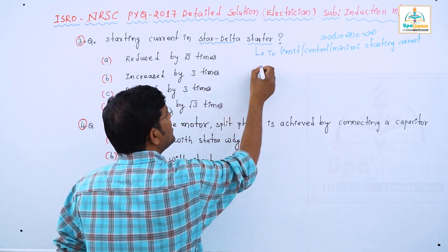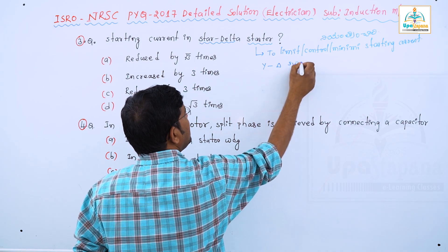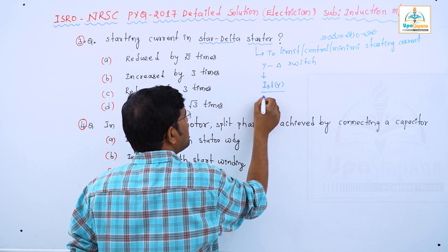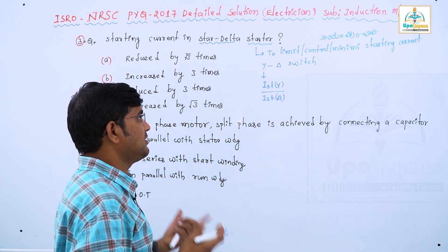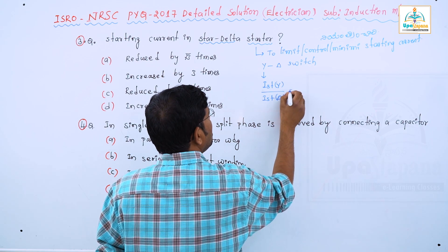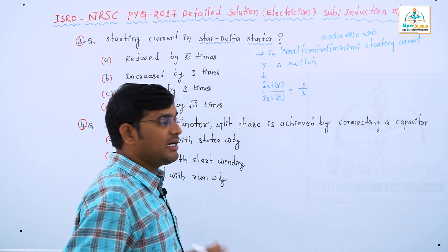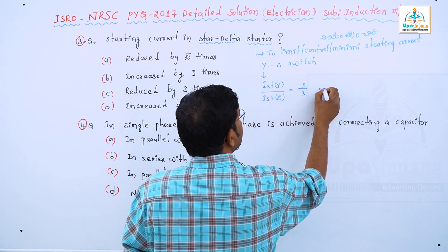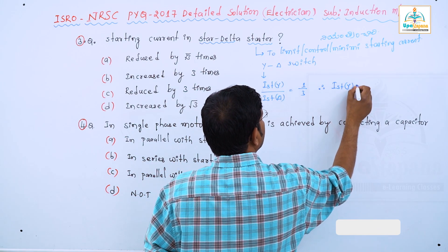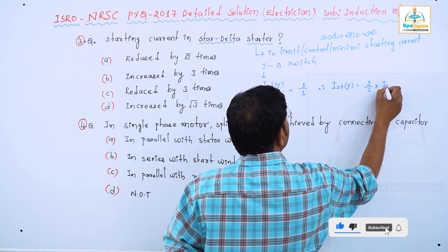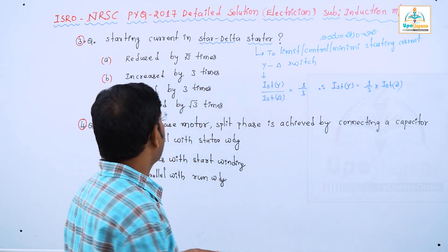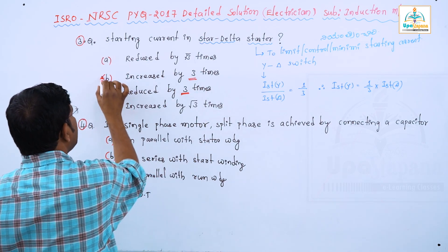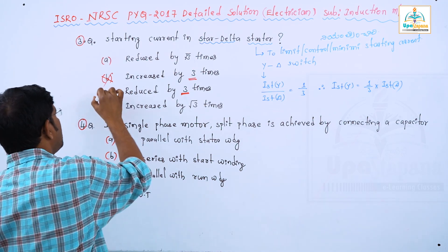The Star Delta Starter works as follows: during starting condition, the stator winding is connected in star connection. During running condition, the stator winding is operated in delta connection. Therefore, in star connection the starting current is 1/3 times that of delta. Compared to delta, the current is reduced by 3 times. Option C is the correct answer.